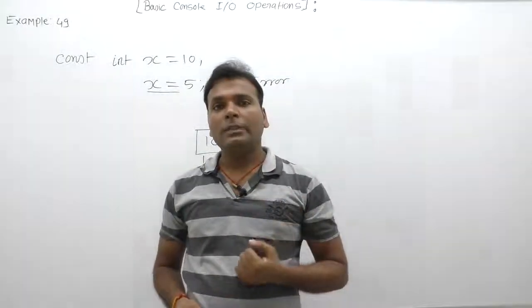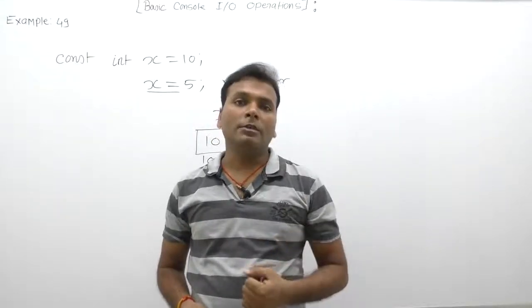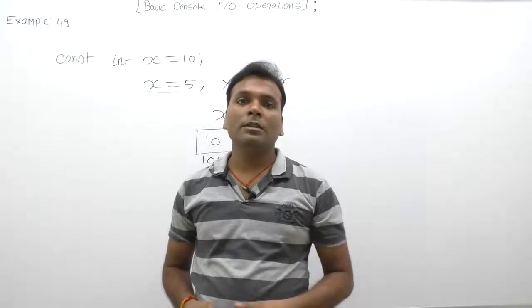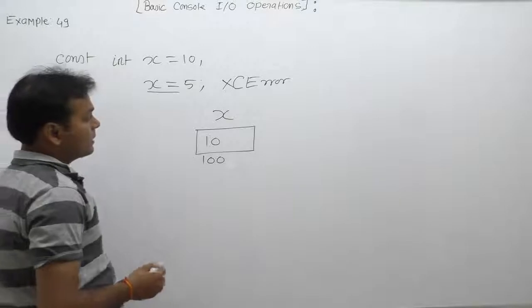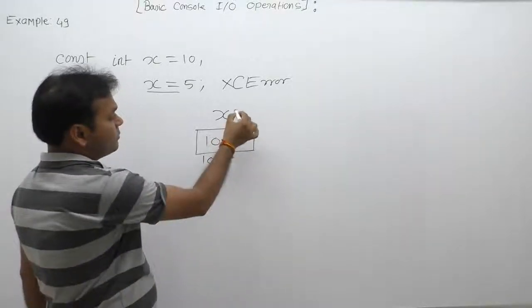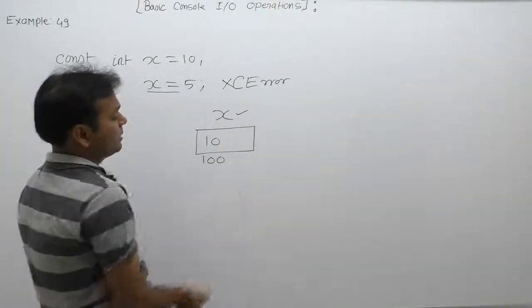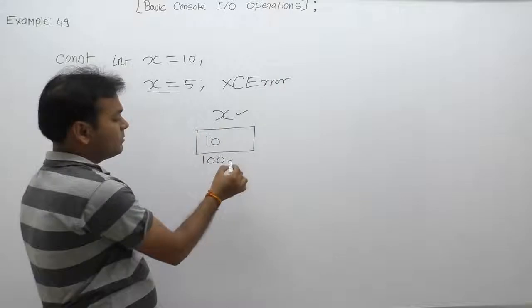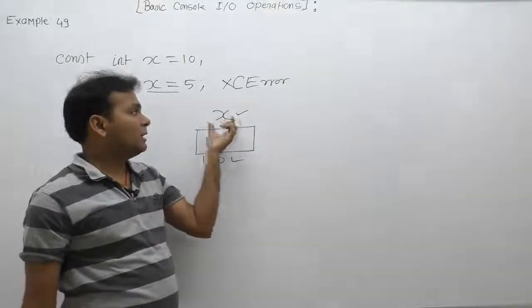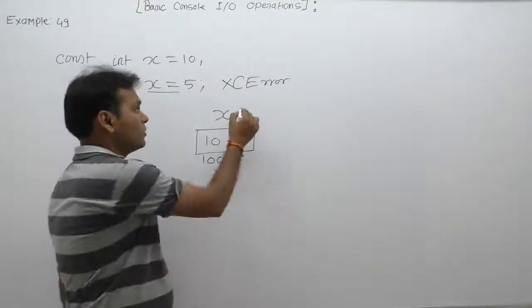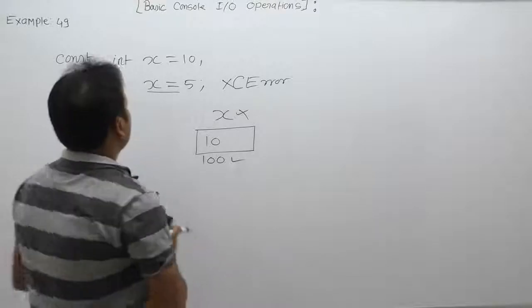On a constant variable we cannot apply the assignment operator. However, we can change the value of a constant variable by using its memory address. That means a constant cannot be changed directly by variable name, but it can be changed indirectly using its address. Let's see an example of this.